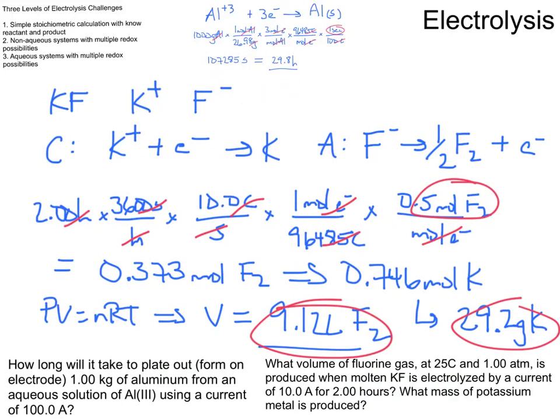In the next set of videos, we're going to take it up a notch. We're going to have systems where there are multiple options that could be formed in the anode and or the cathode. And we have to use our understanding of electrochemistry to first identify what product is going to be formed. And then we can do more factor labeling to actually calculate quantities.